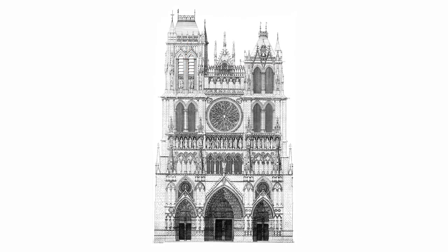Moving on, here we have the west façade of the cathedral. Working bottom to top, we start off with the sculptures at eye level. These make up part of the biblical story being told, and are known as jam figures. Directly above them is the tympanum, which continues the story or message. The tympanum is made up of three parts: the lintel, order, and the voussure, also known as an archivolt. The decorative portions that house the tympanum are called the trefoils.